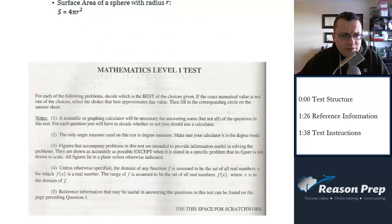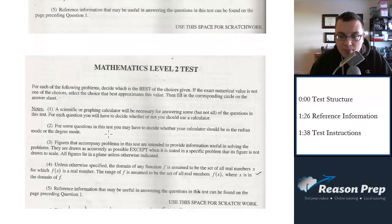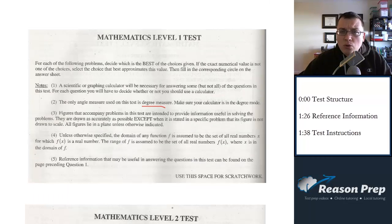Let's just look at the instructions of these tests very briefly. I just want to point out a couple of differences. One, I already mentioned before. The only angle measure used on this test is degree measure. That's true for Math 1. Whereas for Math 2, you will sometimes have to choose whether you're in radian or degree mode. And actually I think that's the only big difference between these instructions.